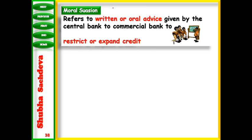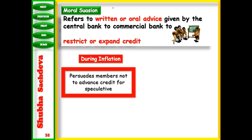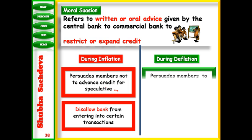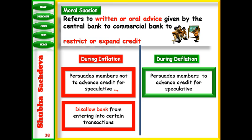The central bank tells commercial banks: if you will not follow my instructions, I will de-recognize you. And if a commercial bank is de-recognized by the central bank, no person will have faith in that bank and it will shut down. So during inflation, RBI persuades member banks not to advance credit for speculative purposes. If banks do not follow instructions, RBI will de-recognize them.